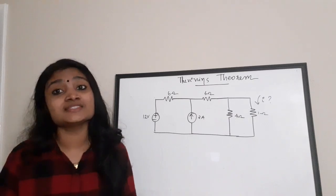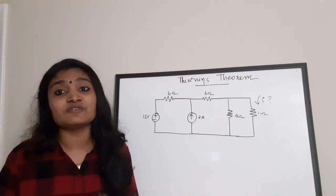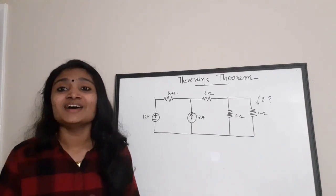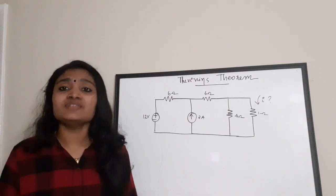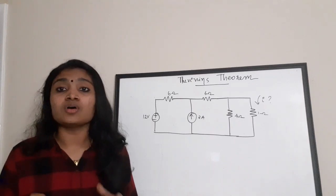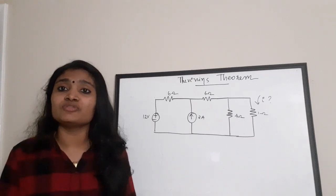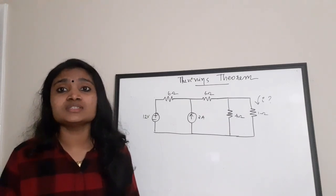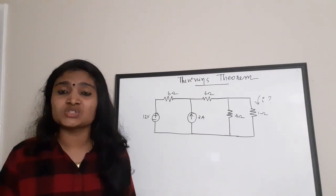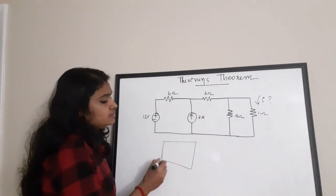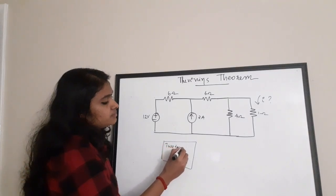Hello, welcome to EC Electronics. This is a video on the very famous Thevenin's theorem. Thevenin's theorem states that any linear two-terminal circuit or network can be replaced with a voltage source in series with a resistor. The voltage source is named VTH or Thevenin's voltage, and the resistor is named RTH or Thevenin's resistor.